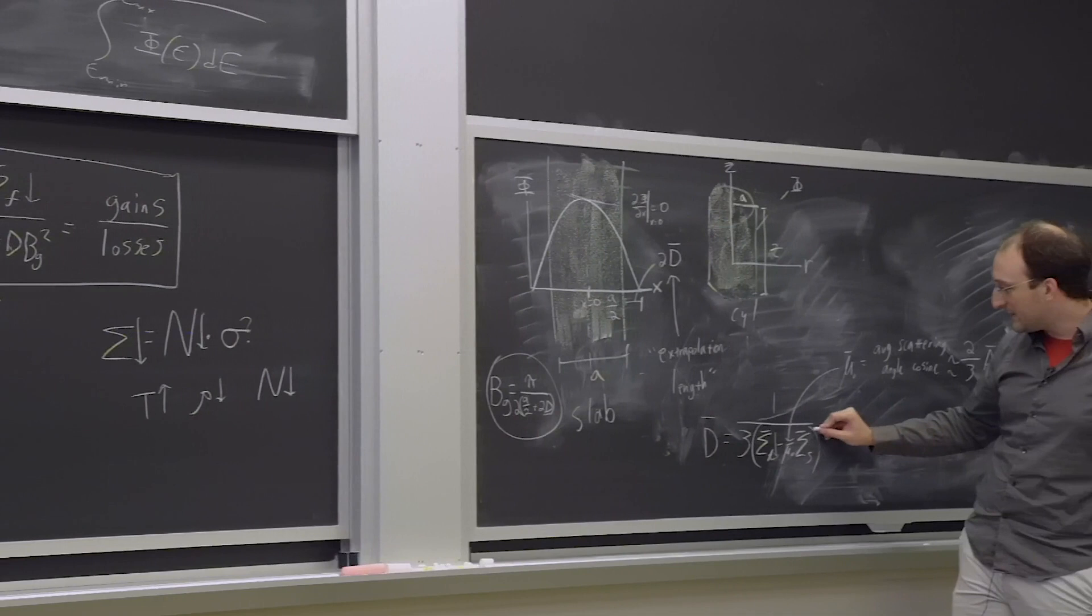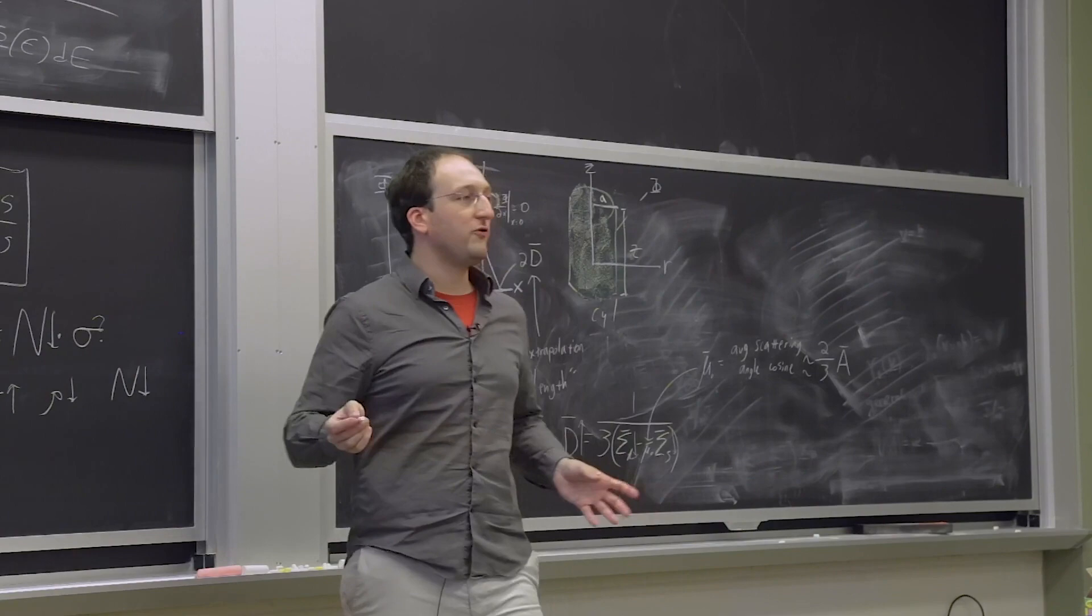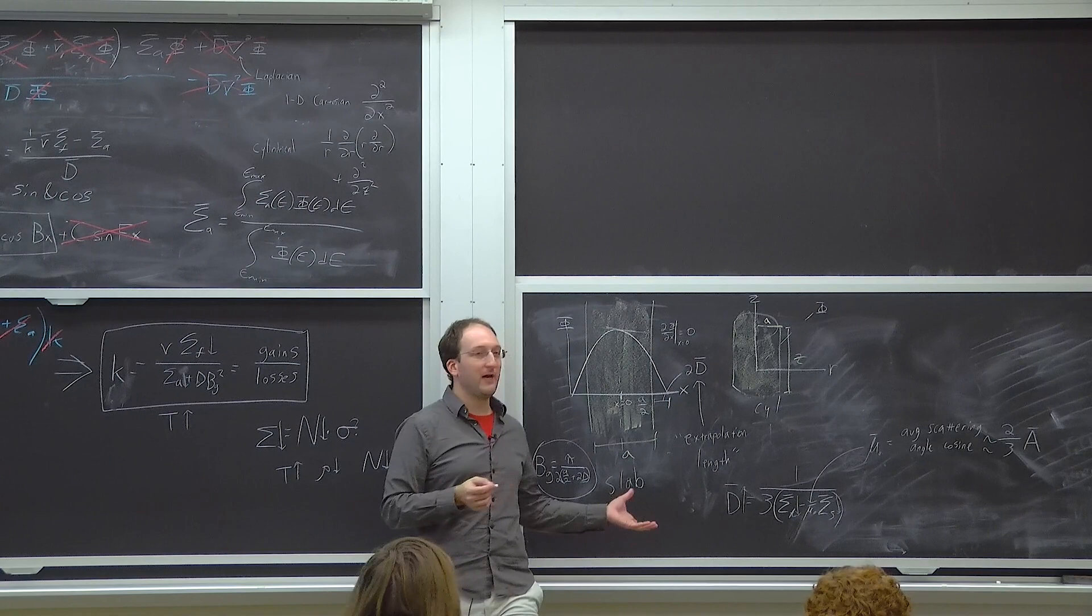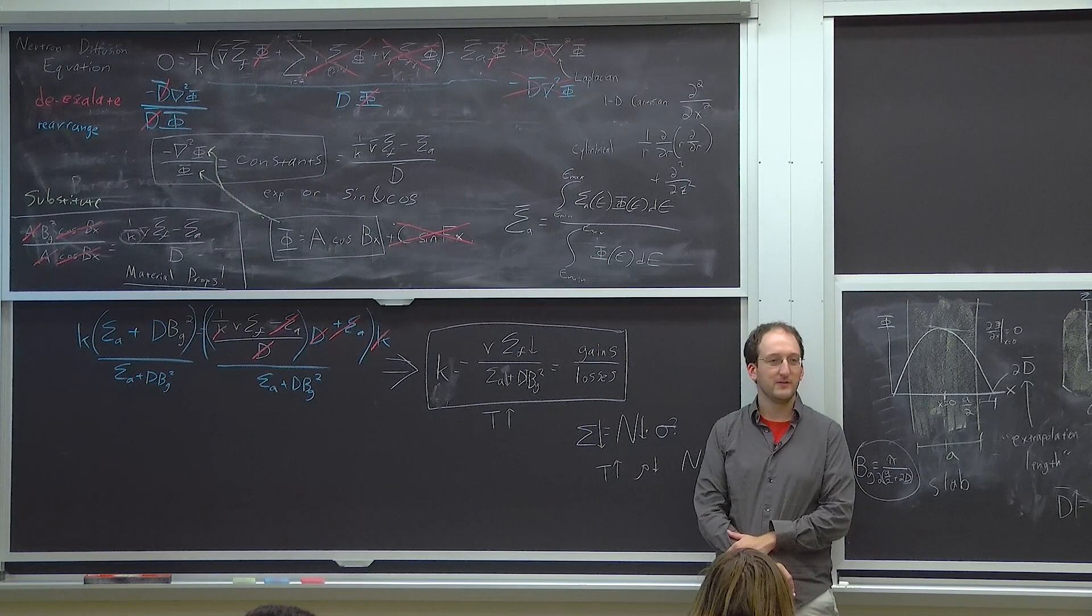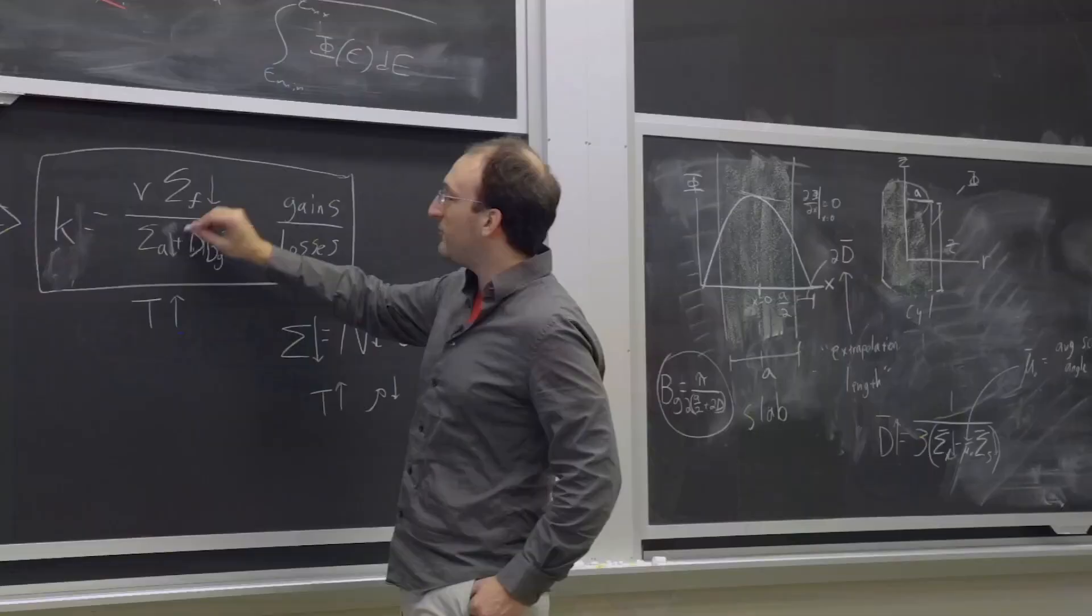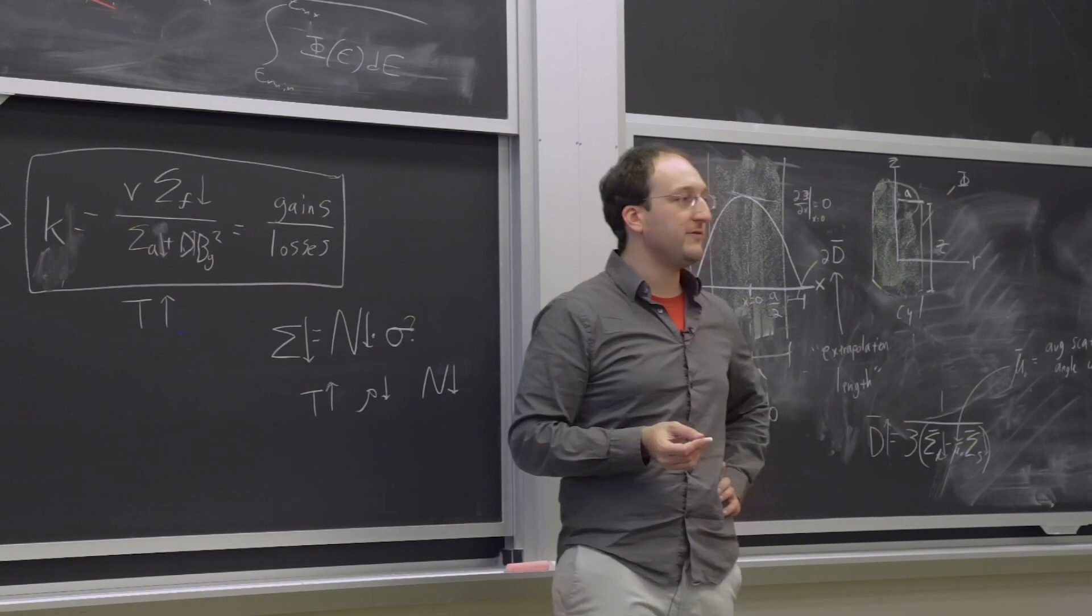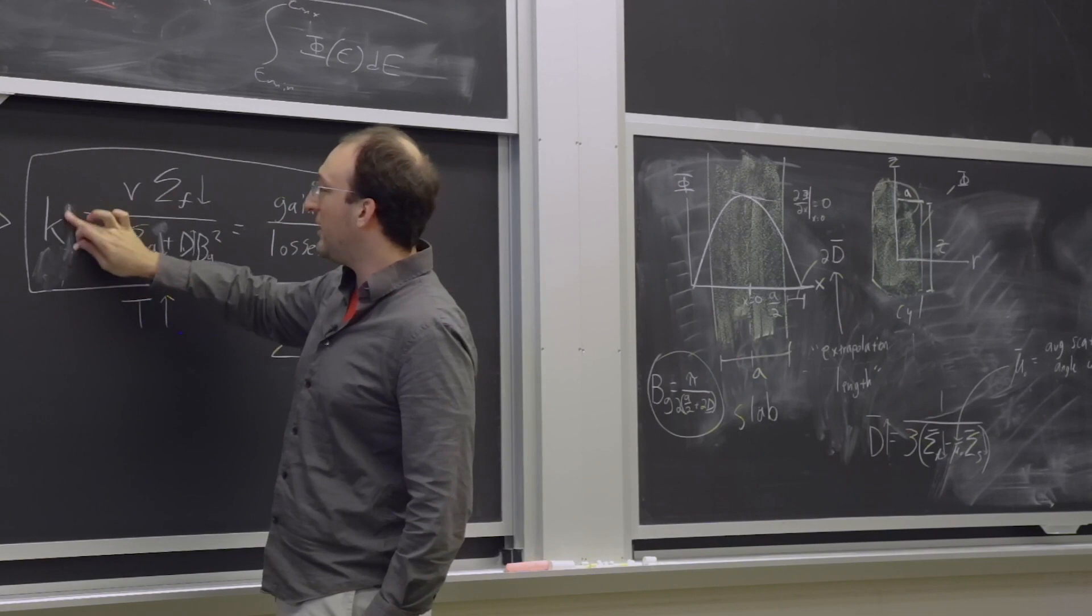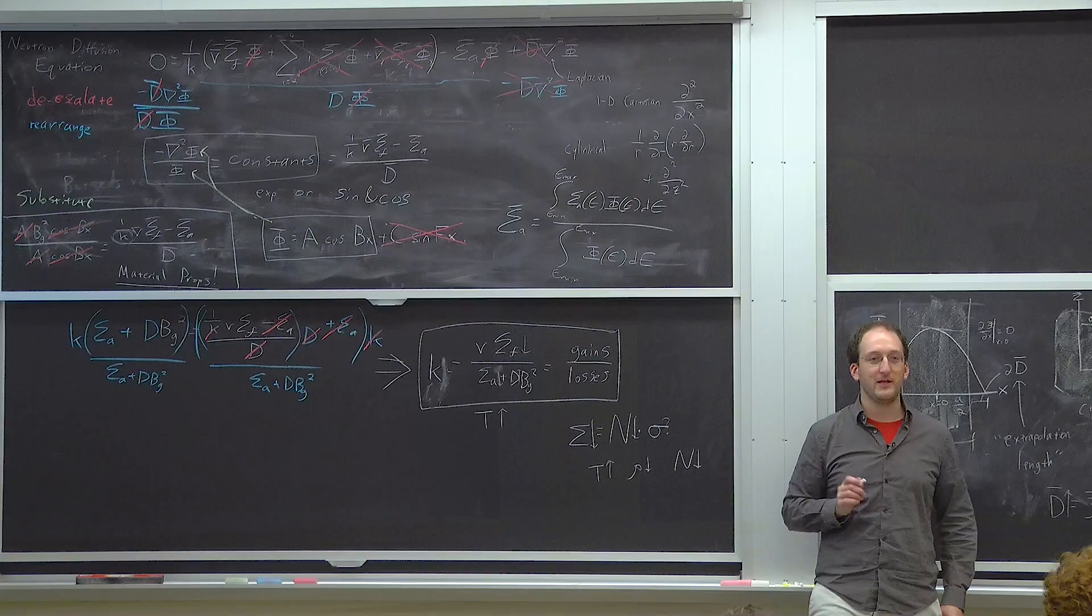So let's try and work out now what would happen to k effective. What happens to sigma fission? This goes down a bit, but what about sigma absorption? Sigma absorption is going to go down. Does BG change? Has the geometry of the reactor changed? Probably not. What about the diffusion constant? Sigma total is going to go down. Sigma scattering is going to go down. So probably what's going to happen is this diffusion constant is going to go up.